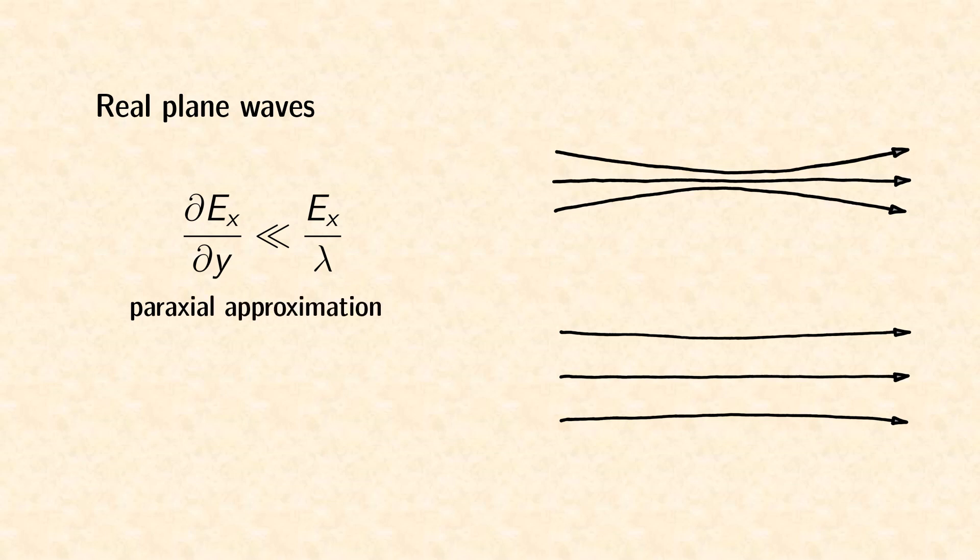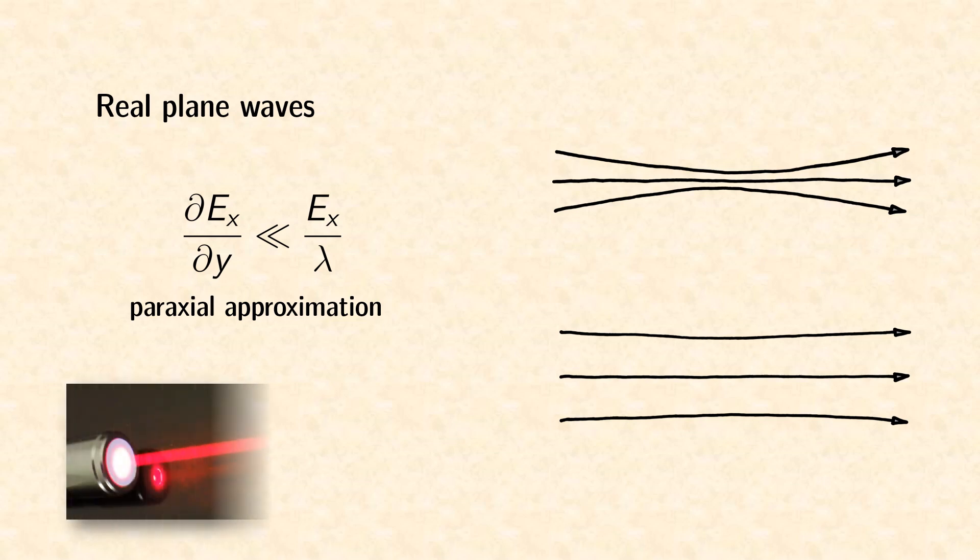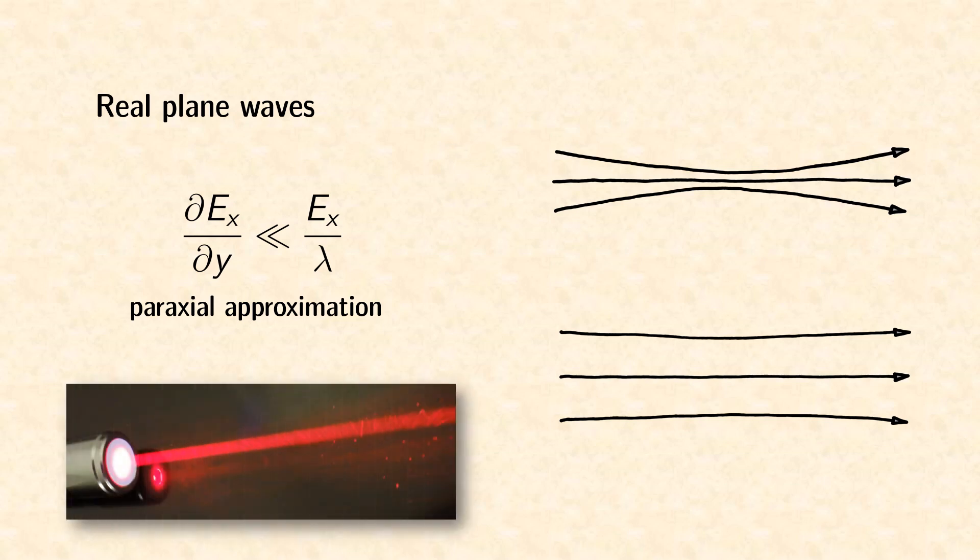And the closest approximation to a plane wave is a monochromatic coherent laser beam with a diameter much larger than its wavelength.